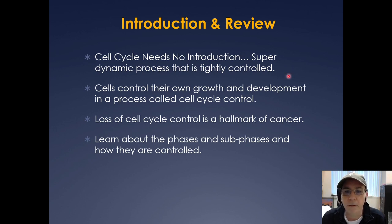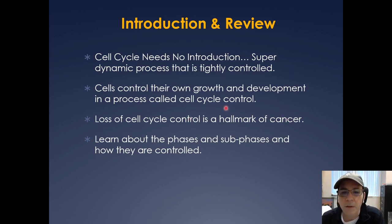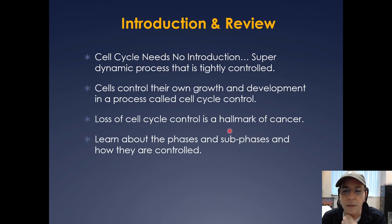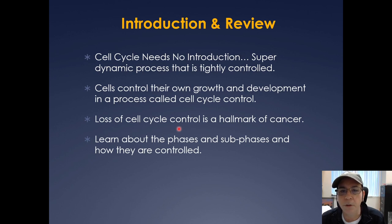Hopefully the cell cycle needs no introduction — I'm sure you've had this in a lot of your different biology courses. Ultimately, cells need to control their own growth and development, and that process is called cell cycle control. This is a really important topic in medicine because loss of cell cycle control is really a hallmark of cancer. Understanding this process has been a huge interest to the scientific community, and there are a couple of chemotherapeutic drugs in use for decades that basically target the cell cycle and stop it from working.